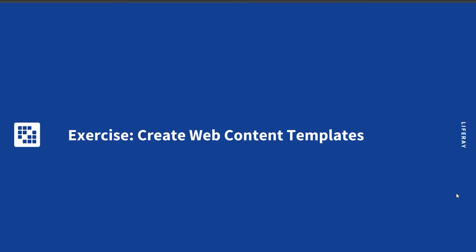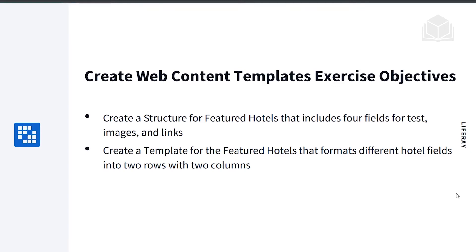We'll do an exercise creating web content templates. By the end of this exercise, we will have learned how to create a structure for featured hotels that includes four fields for text, images, and links. We'll also learn how to create a template for featured hotels that formats different hotel fields into two rows with two columns.